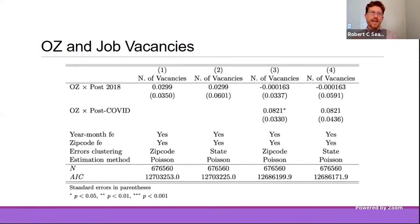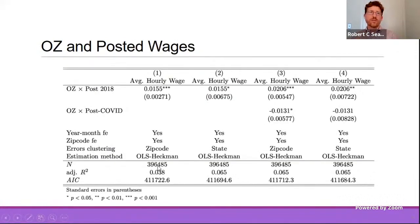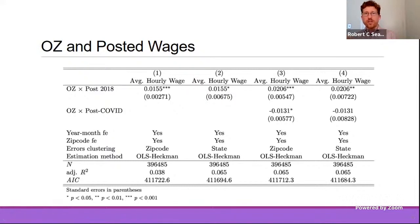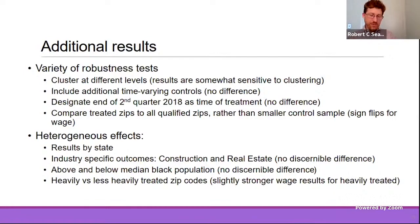For wages, we do see an effect robust to however you cluster. One caveat: for vacancies we have about 675,000 observations, but for wages only about 400,000 because wage data is missing for many periods and zip codes — a selection issue we address. We find a positive, statistically significant, if small, wage effect. Whether it's economically meaningful is something the discussants may weigh in on.